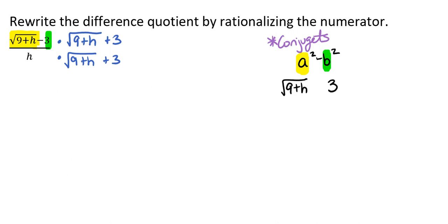So now that we have those written down, let's go ahead and square those. And of course we're going to subtract them, just as it states we should. We know that a square root and a square are inverses of each other, and that we're going to have 9 plus h as our answer here. And we know that 3 squared is 9, and we still have that subtraction right there.